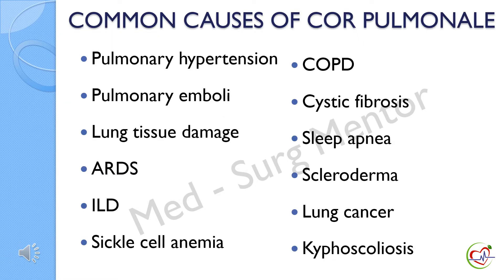Common causes of cor pulmonale are pulmonary hypertension, pulmonary emboli, lung tissue damage, acute respiratory distress syndrome, interstitial lung disease, sickle cell anemia, chronic obstructive pulmonary disease, cystic fibrosis, sleep apnea, scleroderma, lung cancer, and kyphoscoliosis.